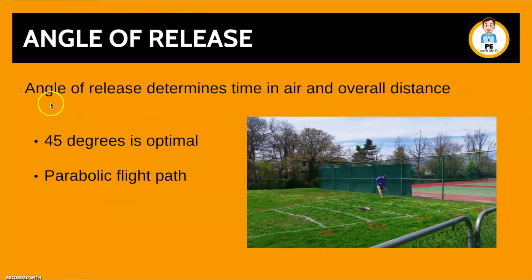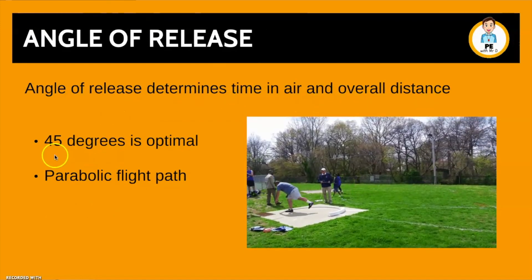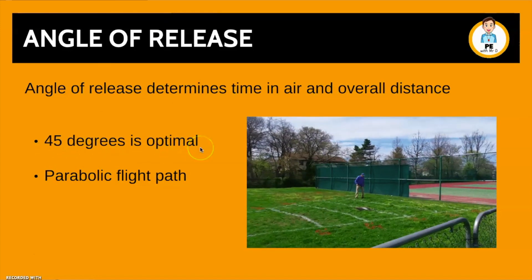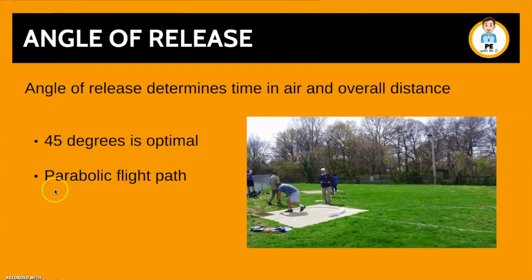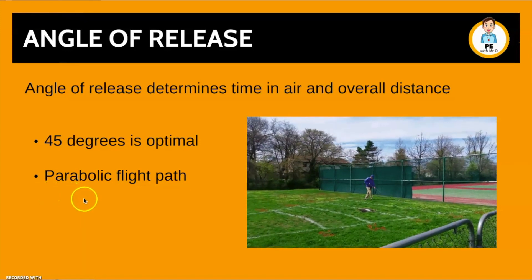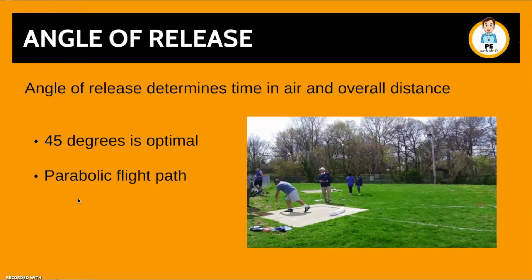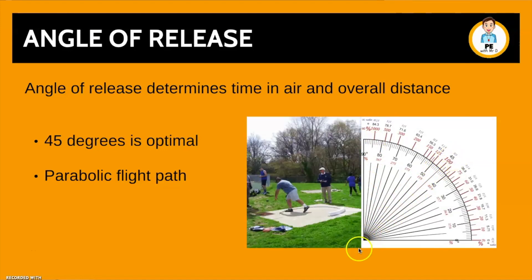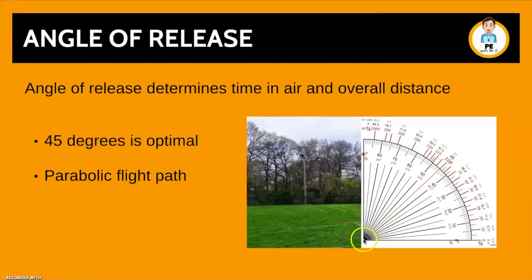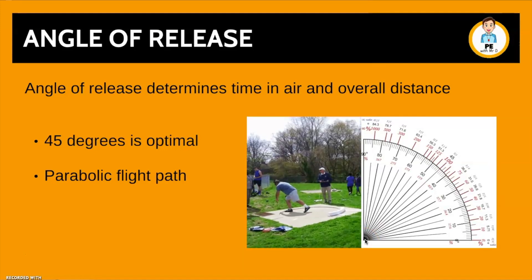Next we have the angle of release. This determines the time in the air and therefore the overall distance. 45 degrees is optimal — this ensures the projectile, or the put here, follows what we call a parabolic flight path, which gives the maximum distance and the most efficient travel time through the air. So when this athlete releases, it should be around 45 degrees — and it was, meaning he gains the maximum distance due to his optimal angle of release.